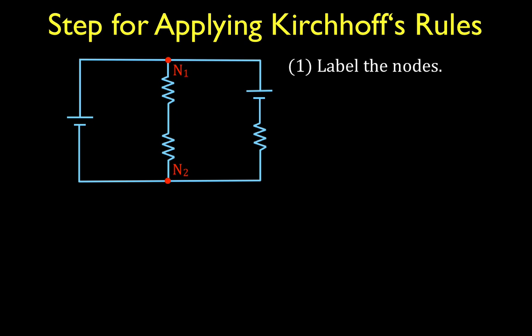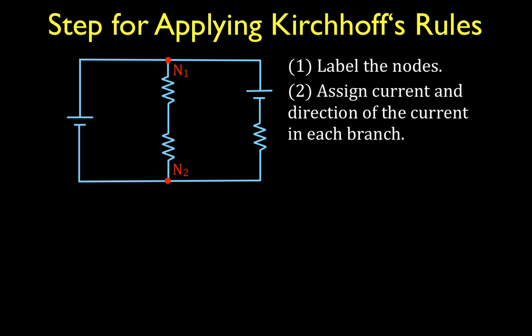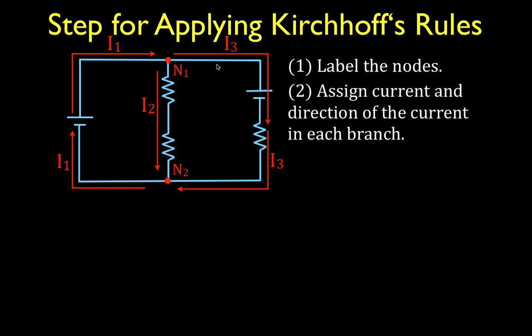The next thing we're going to do is assign a current and a direction of the current in each branch. The direction we choose is completely arbitrary. When we calculate the currents, if we get a positive answer, we'll know we chose the correct direction. If we get a negative answer, it doesn't mean the current is negative — it only means we chose the wrong direction. I have three branches: I1 on the left going clockwise, I2 going from top to bottom between the two nodes, and I3 on the right also flowing clockwise.